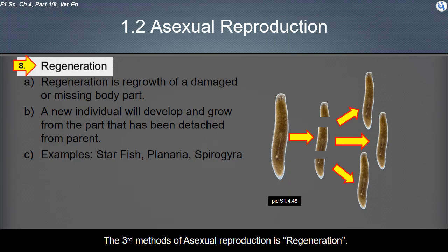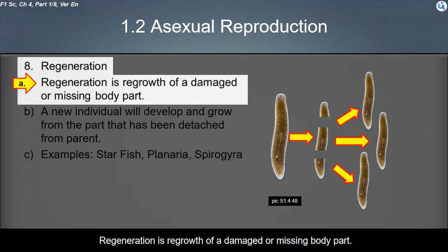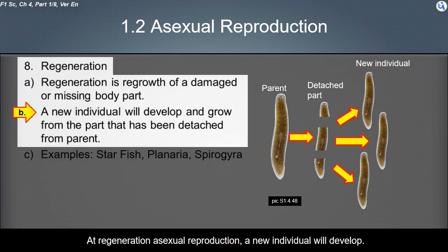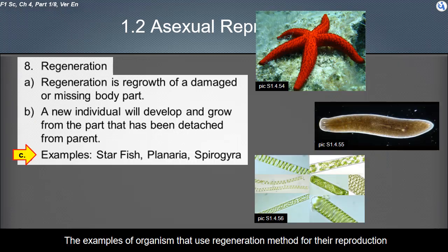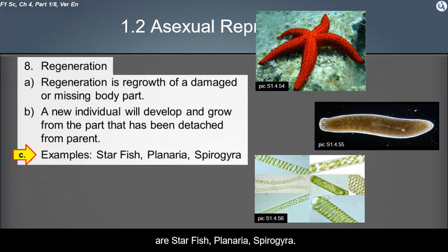The third method of asexual reproduction is regeneration. Regeneration is the regrowth of a damaged or missing body part. In regeneration asexual reproduction, a new individual will develop and grow from the part that has been detached from the parent. Examples of organisms that use the regeneration method are starfish, planaria, and spirogyra.